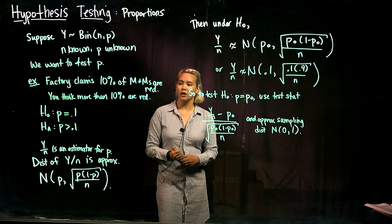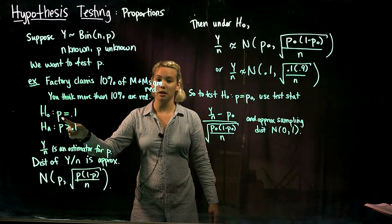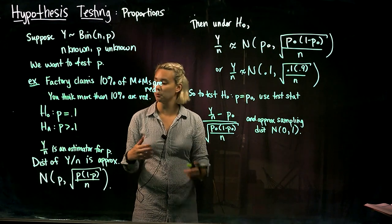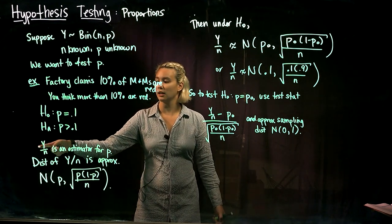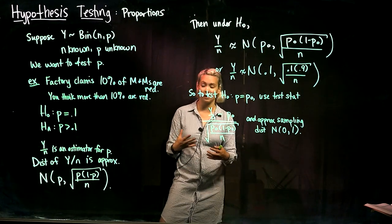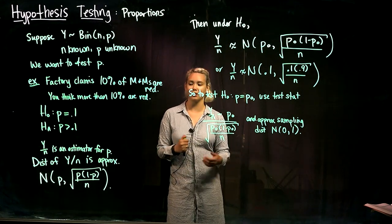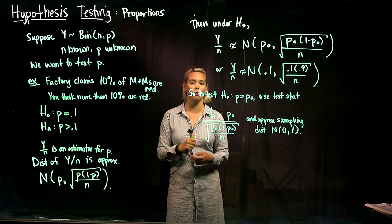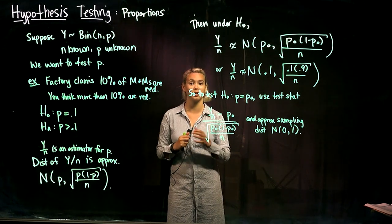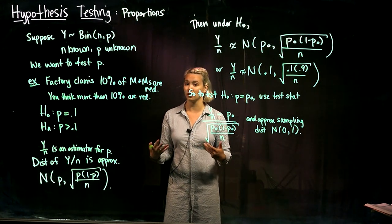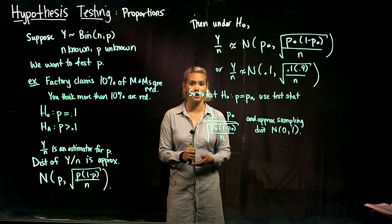We're trying to figure something out about p, so it makes sense to look at the sample proportion. The sample proportion is just the number of red M&Ms divided by the number of M&Ms that you sample. So Y over n is going to be our estimator for p. Usually we call that p-hat, but we can write it Y over n to be explicit. We have an estimator for p, but we need to know the distribution of Y over n.